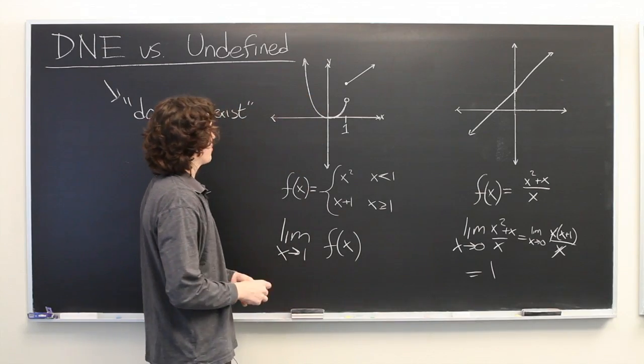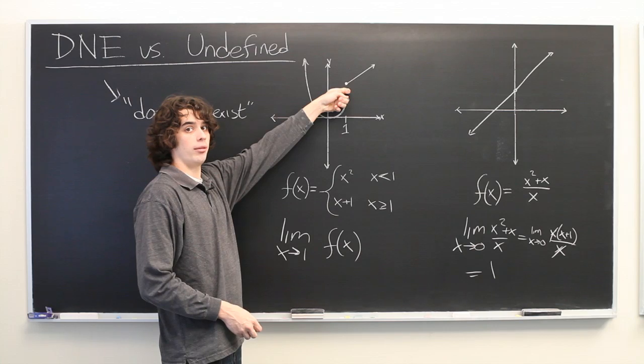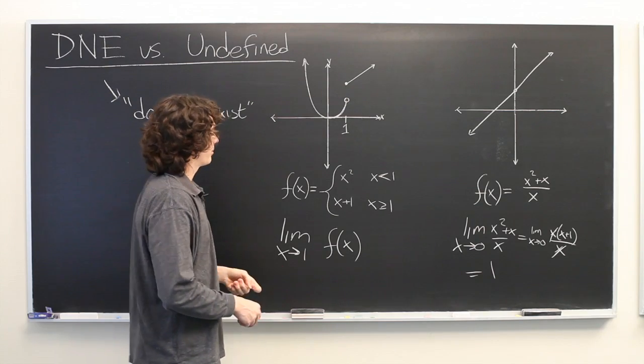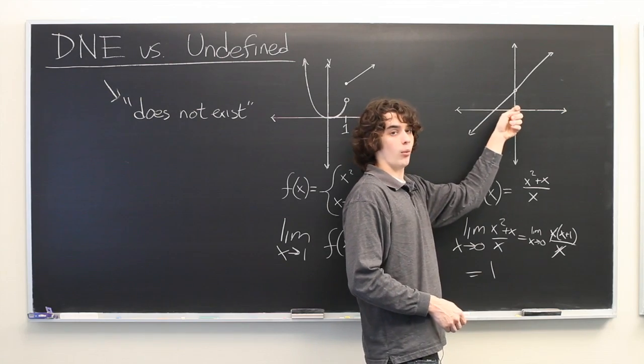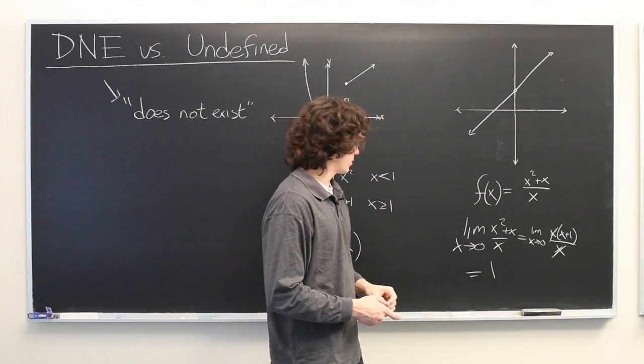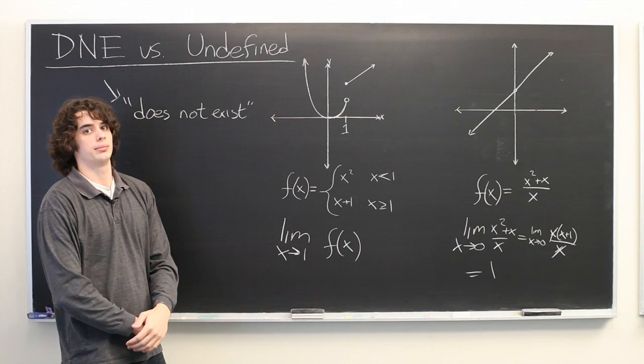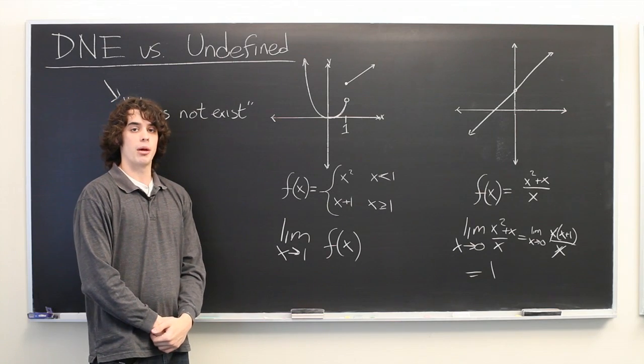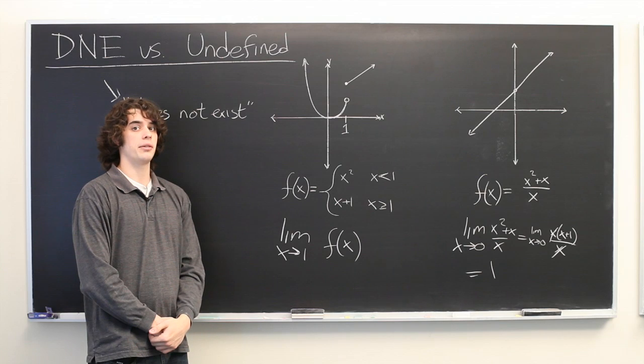So to recap, here we have a function that is defined at a point but the limit does not exist. And here we have a function that is undefined at one point but the limit does exist. So as you can see, the two terms are not equivalent. My name is Ryan Malloy and we've just discussed DNE versus undefined.